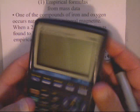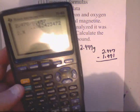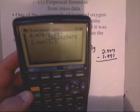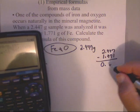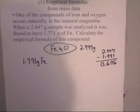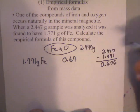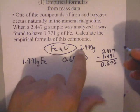So you can do that by hand or you can just punch it in the calculator. I'm lazy, so 2.447 minus 1.771 equals 0.676. So this is going to be 0.676 grams of oxygen. So these two will total this 2.447.